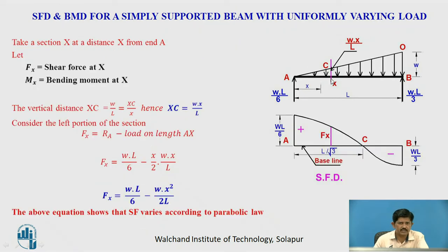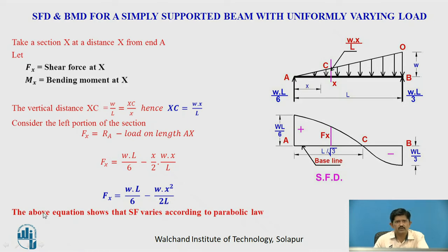Again we consider any section at a distance of X from A. The ordinate is calculated using similar triangles with triangle O, B, A: W upon L equals XC upon X. Hence XC equals W by L into X. So this ordinate is W by L into X. Considering the left portion: FX equals RA minus load on length AX, so FX equals WL by 6 minus X by 2 into WX upon L, which gives FX equals WL by 6 minus WX square upon 2L. This equation shows that the shear force varies according to the parabolic law.